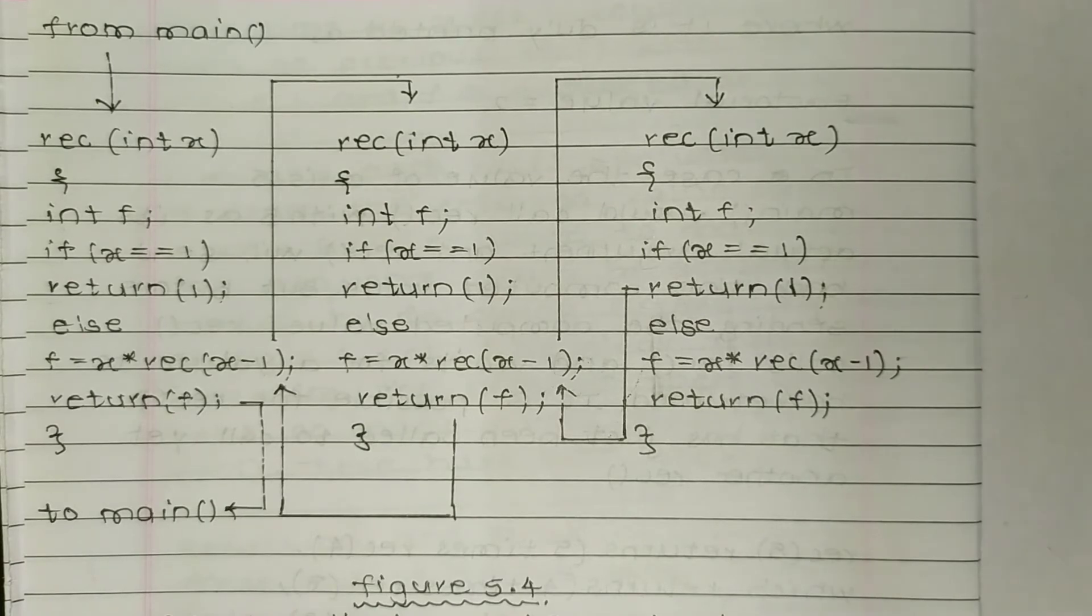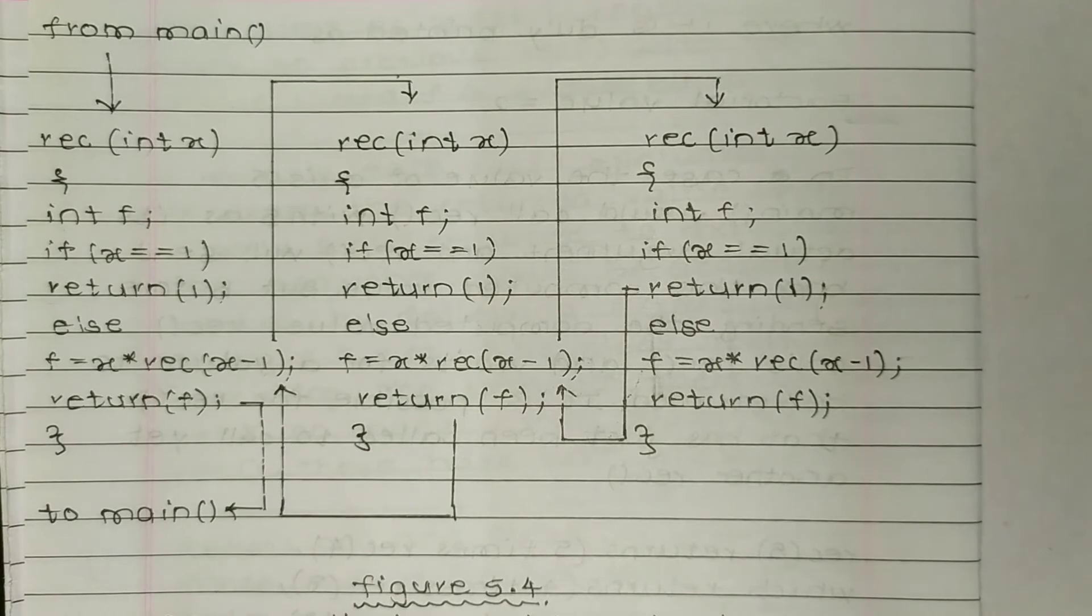3 is not equal to 1, so the else statement is carried out: 3 times rec(3-1), which is 2. A new argument will be there: rec(2). This is a recursive call, and the else statement is carried out.